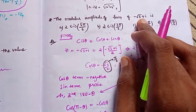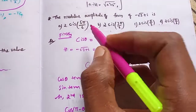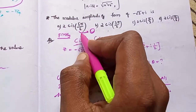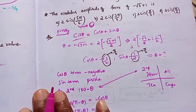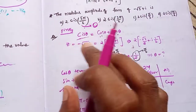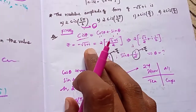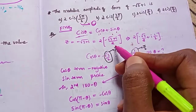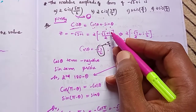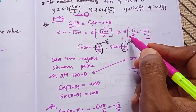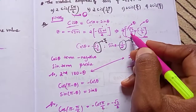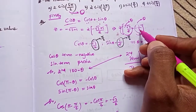The modulus-amplitude form of √3 + i. Here e^(iθ) = cos θ + i·sin θ. We set z = √3 + i, and r = 2. Dividing: 2(−√3/2 + i·1/2). So the x-term gives cos θ = −√3/2 and the y-term gives sin θ = 1/2.